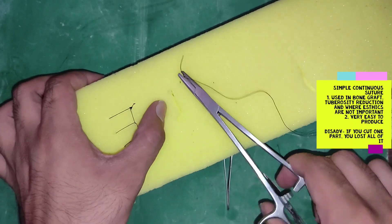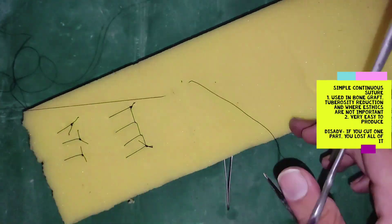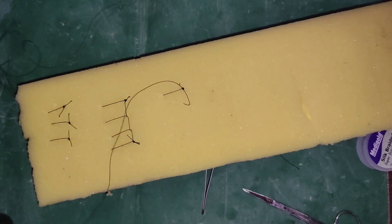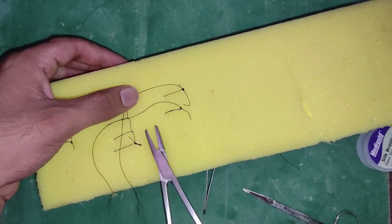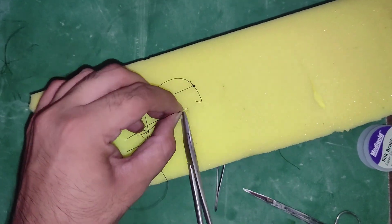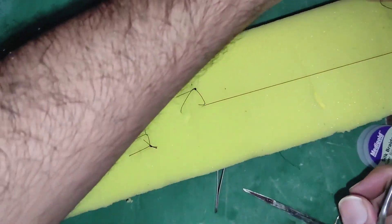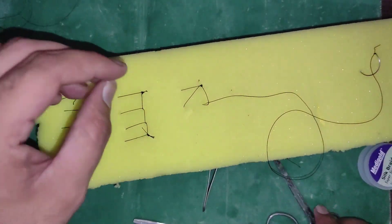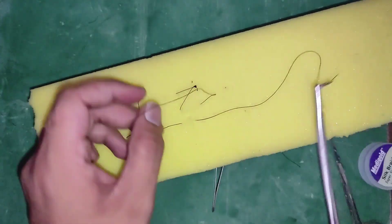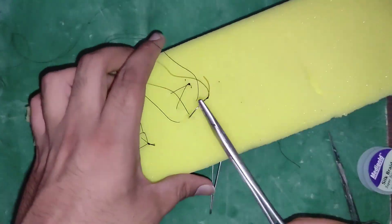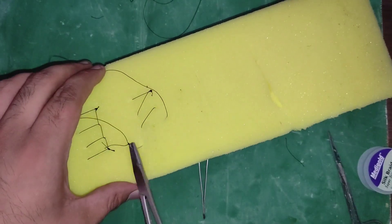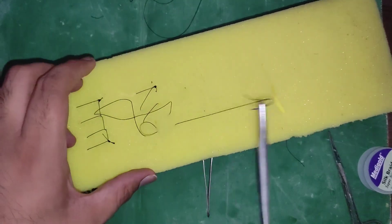The third technique is simple continuous suture. We start the same way, but in this technique there is no locking involved. Unlike the continuous locking suture, each pass is not locked through the previous loop — that is why it is known as simple continuous suture.